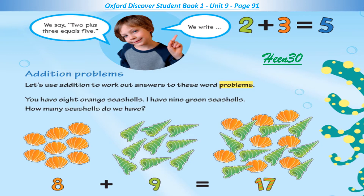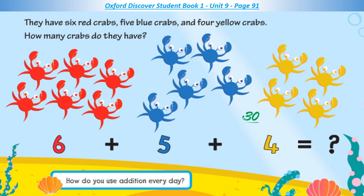Addition problems. Let's use addition to work out answers to these word problems. You have 8 orange seashells. I have 9 green seashells. How many seashells do we have? 8 plus 9 equals... They have 6 red crabs, 5 blue crabs, and 4 yellow crabs. How many crabs do they have? 6 plus 5 plus 4 equals... How do you use addition every day?